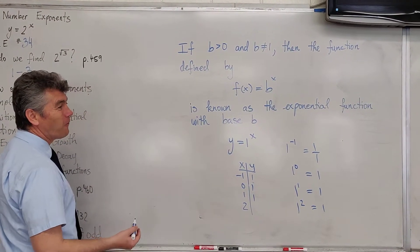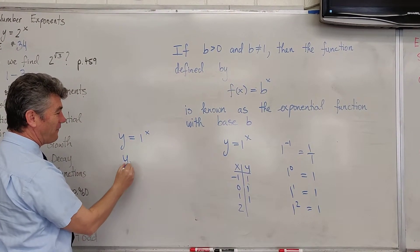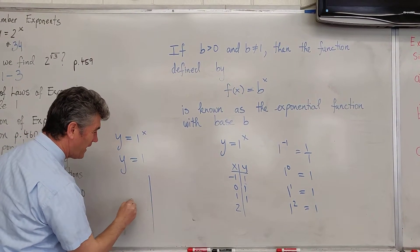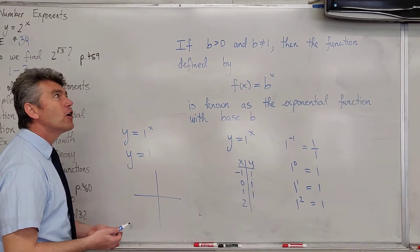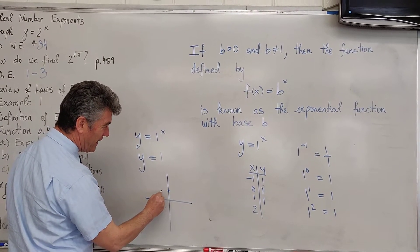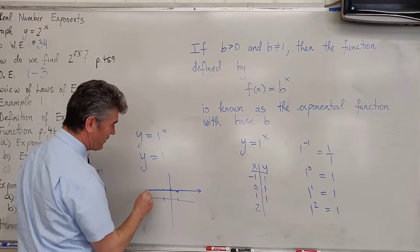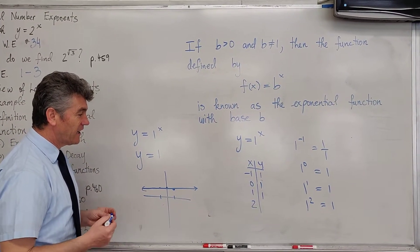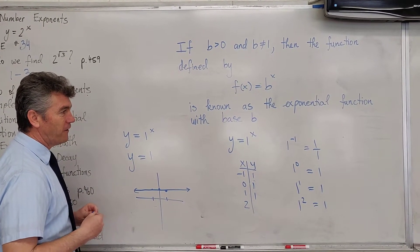So what is the graph of y equals 1 to the x? It turns out to be the graph of y equals just 1, which is a horizontal line. This is the reason why we're told that b cannot equal 1. So let's plot a few points: (0, 1), (negative 1, 1), (1, 1). The end result is that the graph of y equals 1 to the x is just a line — a linear function, not an exponential function.